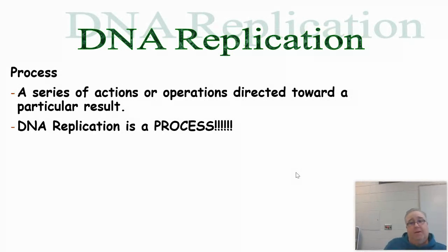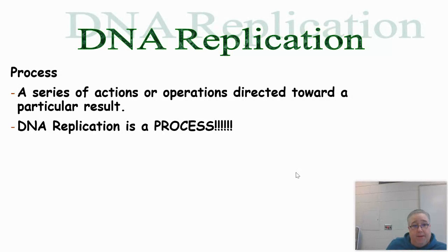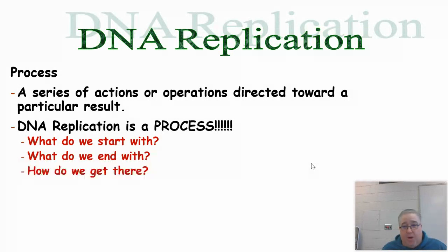I'm going to explain the process of how DNA gets replicated over the next several slides. In order to explain the process, there are complex diagrams you'll need to pay close attention to. With any process, there are three things to focus on: number one, what are we starting with? Number two, what are we going to end up with? And number three, how are we going to get there? For example, if you're going to bake chocolate chip cookies, you start with eggs, milk, sugar, and chocolate chips, and you end up with delicious cookies — but how do you get from point A to point B? That's what a process is.